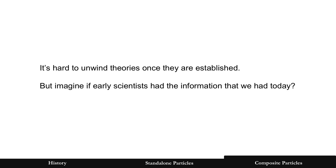It's very hard to unwind theories once they're established, but I pose this question: imagine if early scientists had the information we have today. Imagine that they knew about the pentaquark, that early quantum theorists knew about the neutrino — it was discovered later. My question is: would we still have the theories that we use today?